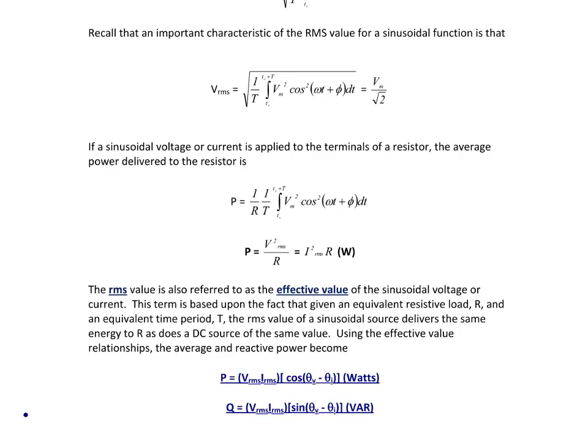So using the effective value relationships, we can now rewrite the average and reactive power as P equals v_RMS I_RMS cosine(θ_v - θ_i), and Q equals v_RMS I_RMS sine(θ_v - θ_i).